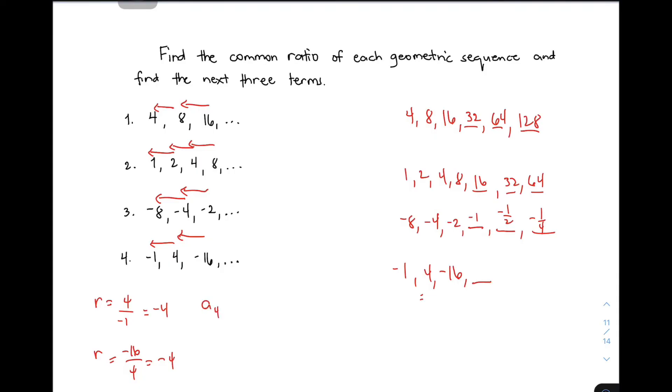The fourth term can be found by multiplying -16 by -4. We know the answer will be positive. And 16 times 4 equals 64. The fourth term is 64.